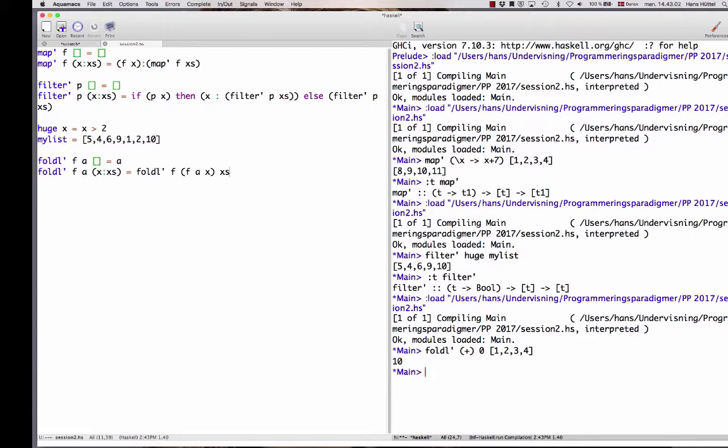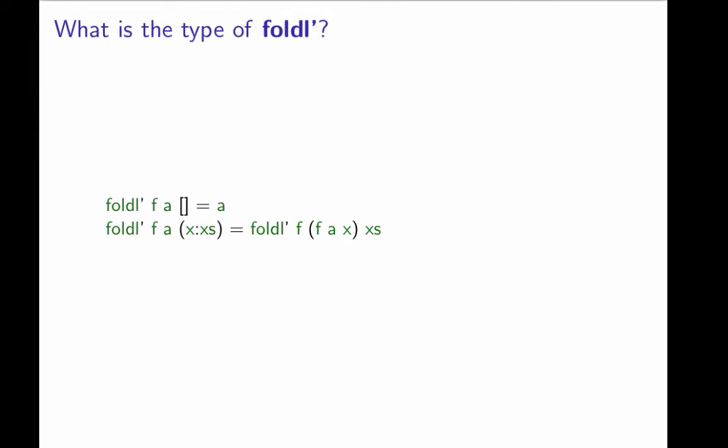But what is the type of foldl prime? Let's figure that out now. Foldl prime is a higher order function. Its first argument is a function f, and f is a function that takes two arguments. We see that here if it's applied to an a and an x.